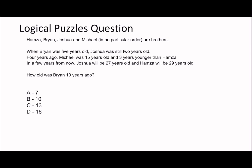It says: when Brian was five years old, Joshua was still two — so to go from Joshua to Brian it's plus three. Then it says four years ago Michael is 15 and three years younger than Hamza, so to go from Michael to Hamza it's plus three. Then it says in a few years from now Joshua will be 27 and Hamza will be 29, so to go from Joshua to Hamza it's plus two.